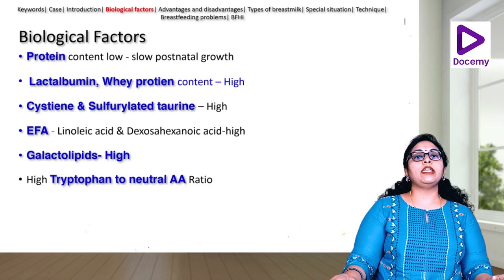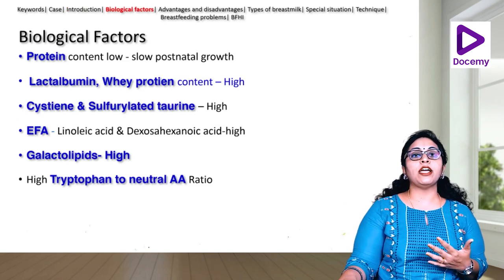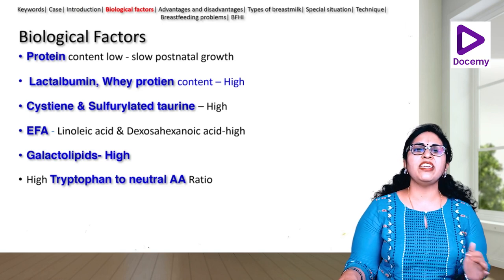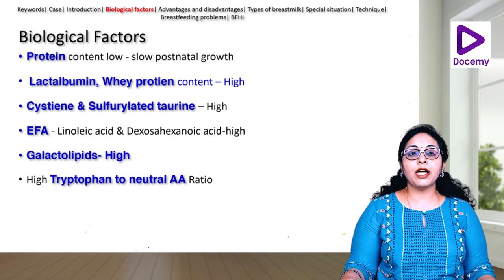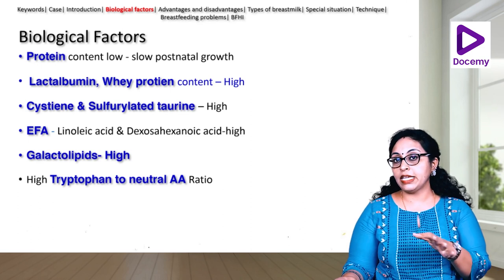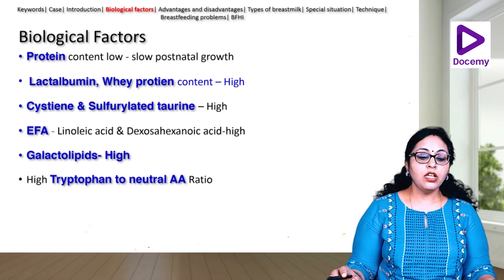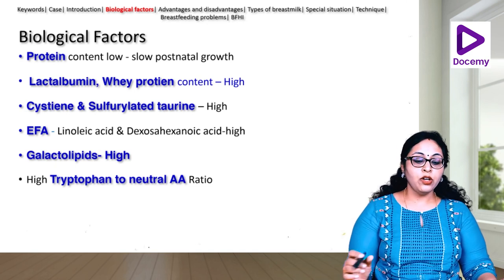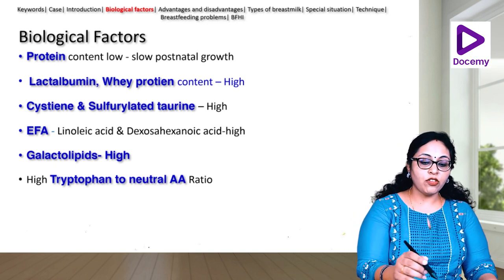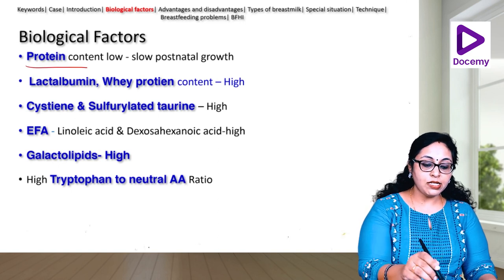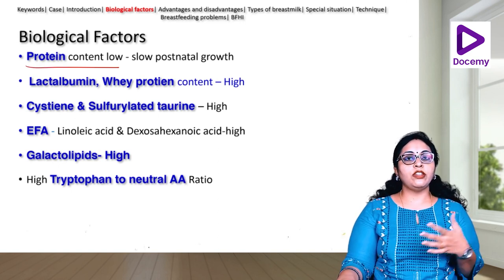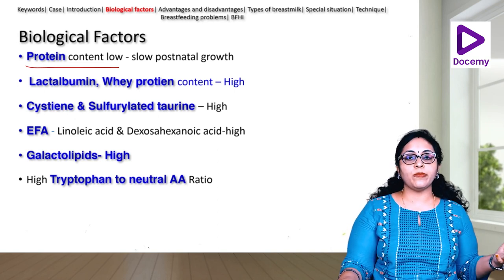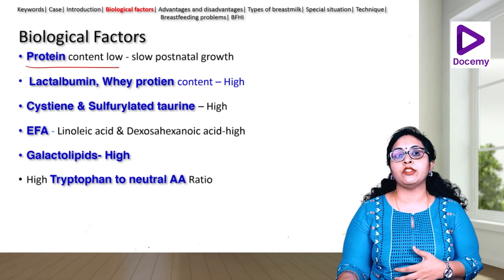Let us come to the importance of breast milk — specifically the biological and immunological factors in breast milk. This is a very common question for theory exams, and you can also get many MCQs from this topic. We are comparing human milk with other animal milks that humans consume. The protein content of breast milk is low compared to cow's milk, because different species have different protein content.